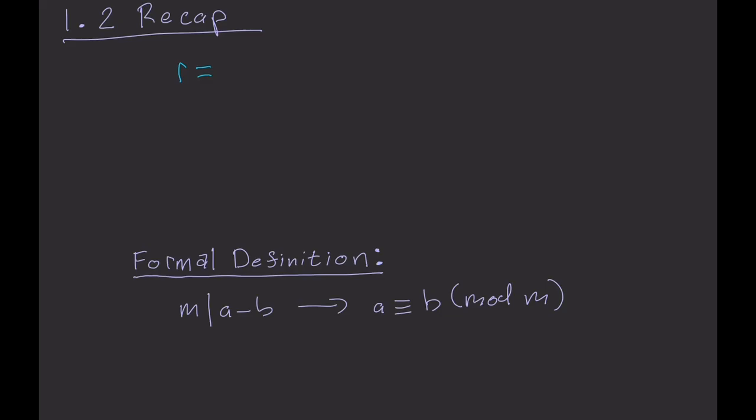Now, if we were to let our remainder, r, equal the remainder of two different integers, a and b, or a mod m for a and b mod m for b, then those two integers, a and b, would be congruent modulo m. Now, a and b could be identical, but that's not necessary. All that is necessary is that the remainders, when divided by m, are equal.